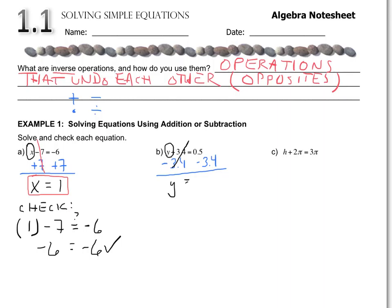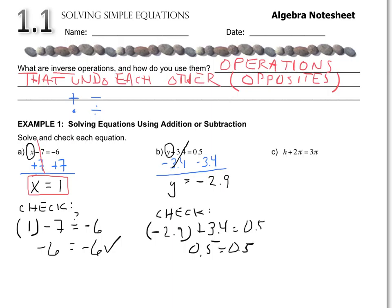y comes down, and when I take 0.5 and subtract 3.4, I get negative 2.9. Is this the right answer? You don't need to wait for a test to come back — you can do a quick check. We plug in negative 2.9 where we saw the y, add 3.4 to it, and it should equal 0.5. Using PEMDAS and adding those two together, I get 0.5 equals 0.5. Check — this is the correct answer.